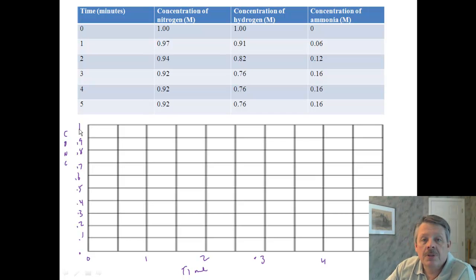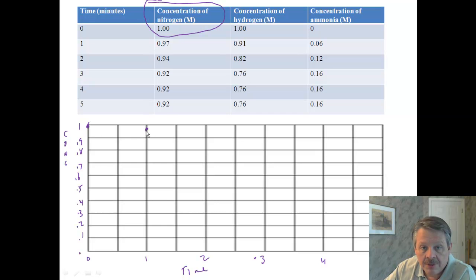Alright. So, let's look, for example, at our concentration of nitrogen. So, let's just do nitrogen alone. And we start with a concentration of one, which means we start up here with a concentration of one, and then we go to 0.97 after a minute, and then we go to 0.94 after a second minute, and then we go to 0.92 after a third minute, and then we stay at 0.92. So, we should be able to see that here, starting at three minutes, we are essentially level. So, by the time we get to three minutes, we were in equilibrium. That's what this graph tells us.